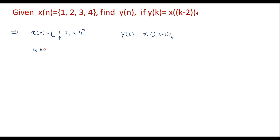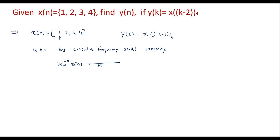We know that by the circular frequency shift property, the DFT of W_N^(-ln) · x(n), its N-point DFT, will be X((k-l))_N. So let this be equal to Y(k). It means the DFT of this expression is Y(k), therefore the IDFT of Y(k) is y(n). So y(n) is equal to W_N^(-ln) · x(n).